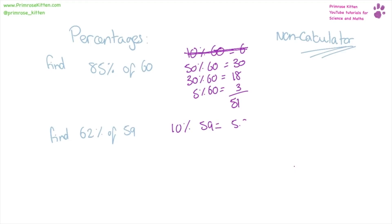10% of 59 is 5.9. We can find 50% either by dividing it in half or we can take our 10% and times that by 5. So 50% of 59 gives us 29.5.